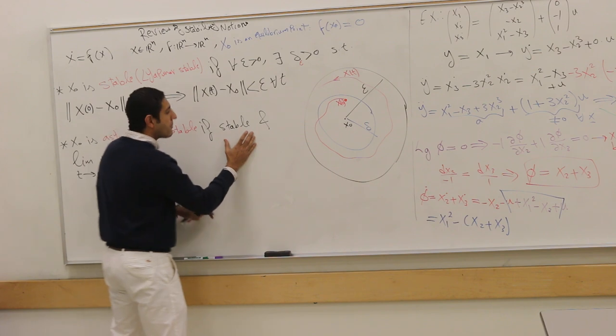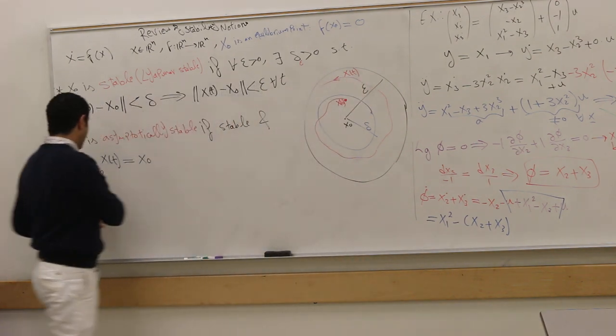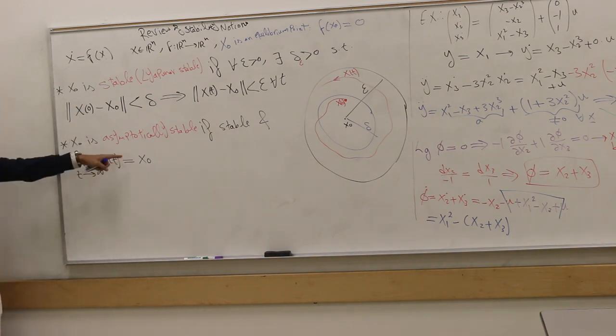So this stability is the mere stability. So it's bounded, and you can control the bound. And we have asymptoticness in the convergence, asymptotic convergence.